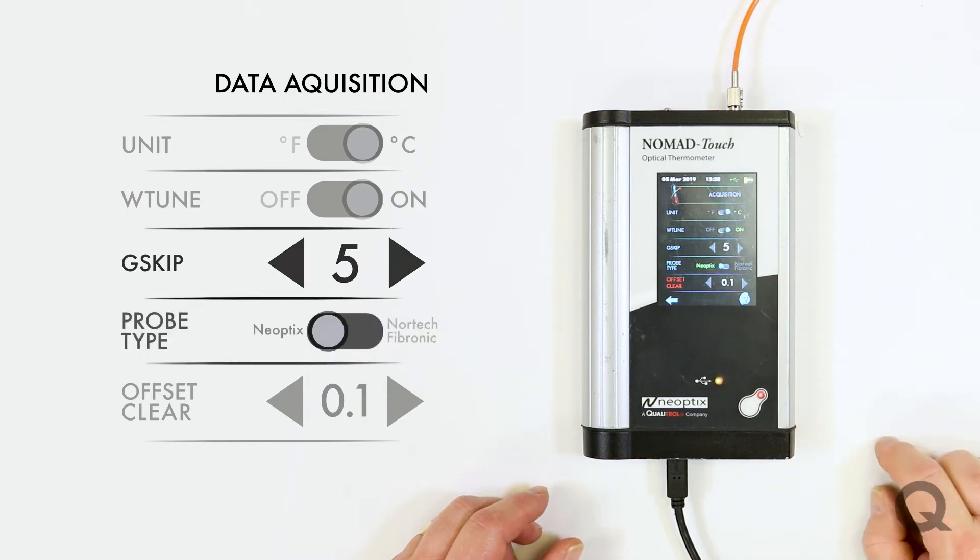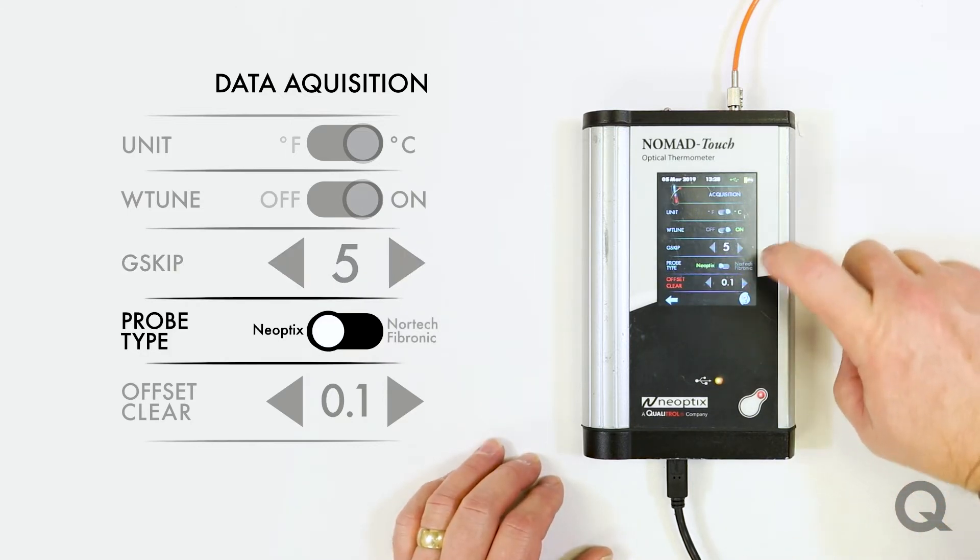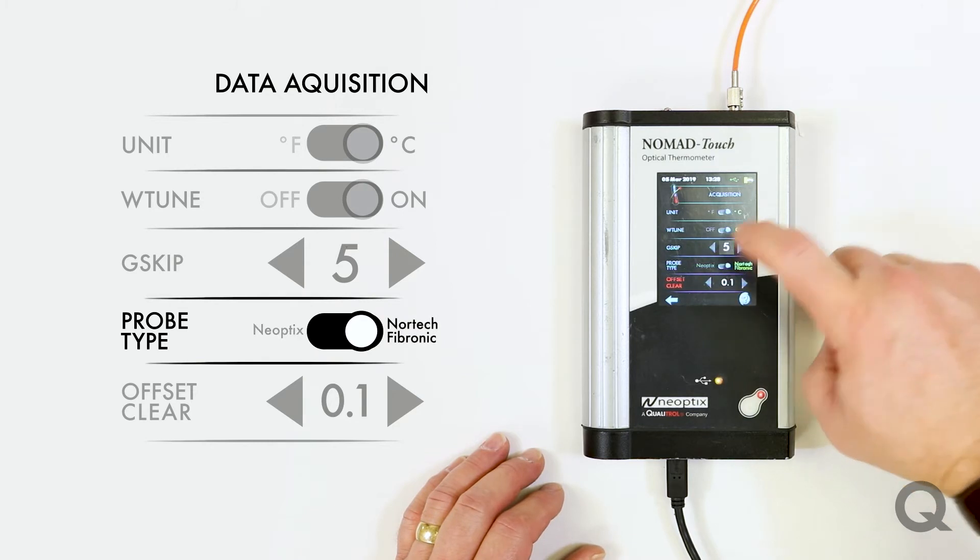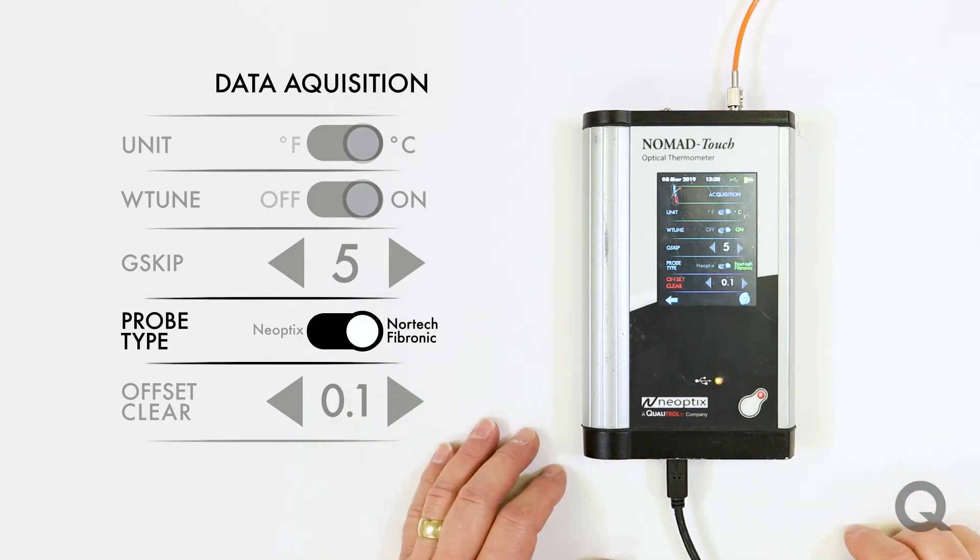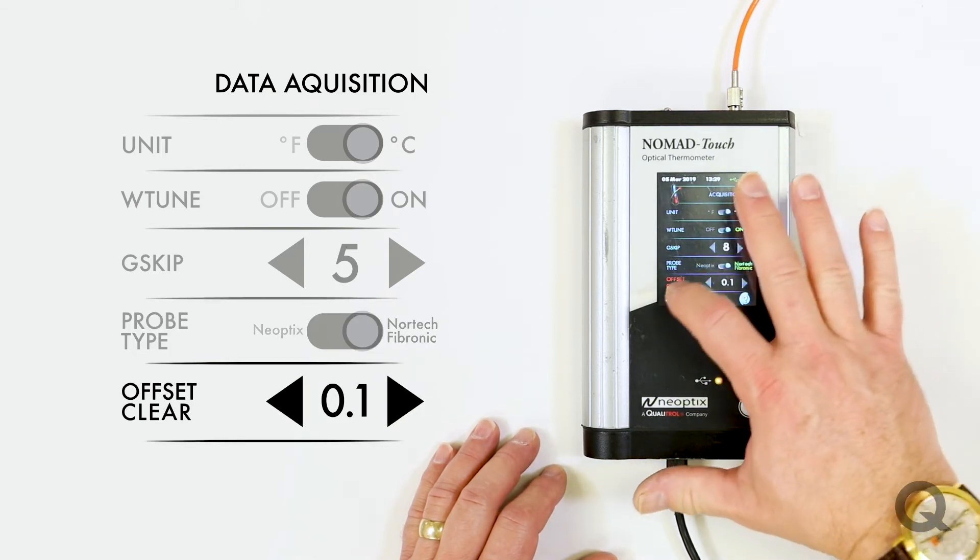Probe type. This can actually use Neoptix probes, obviously, or Nortech Fibronic probes if you've got those, so you can test either. And you can do offset clears if necessary.